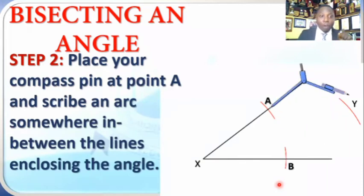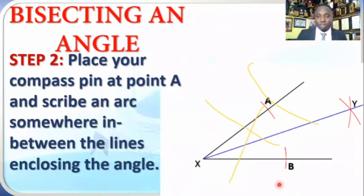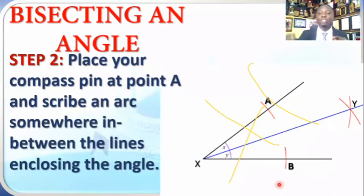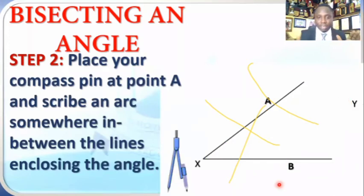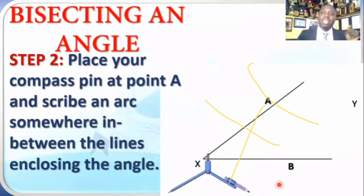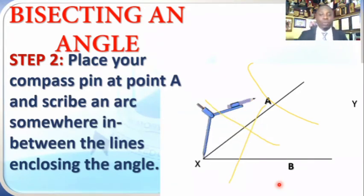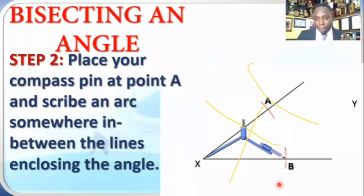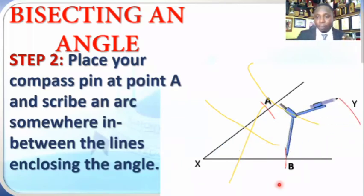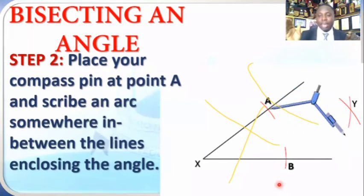Having had my points A and B, step two: place my compass pin at point A and scribe an arc. The arc you scribe should be somewhere in between these two lines so that they intersect. Every arc is a part of a circle — you can draw anywhere, but you must be careful to draw where they will intersect. Then at point B, scribe an arc as well. Where they meet, call it point Y.